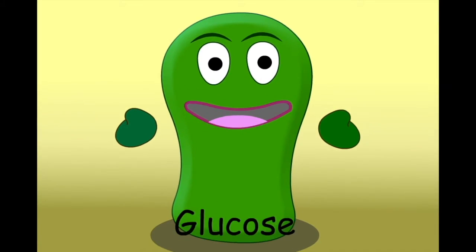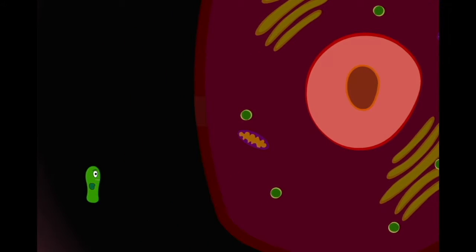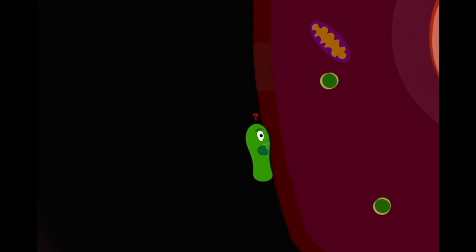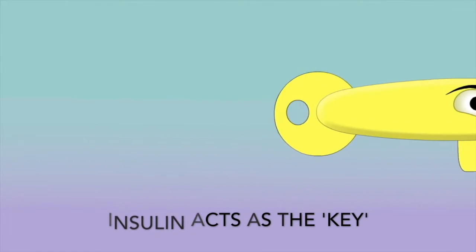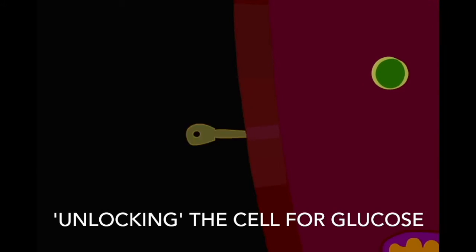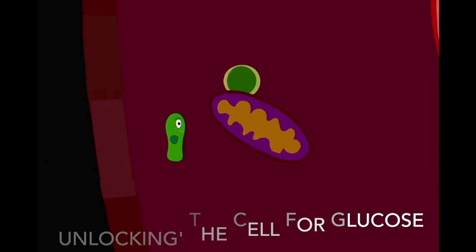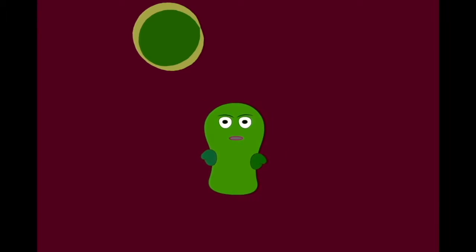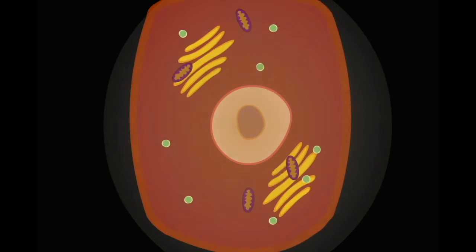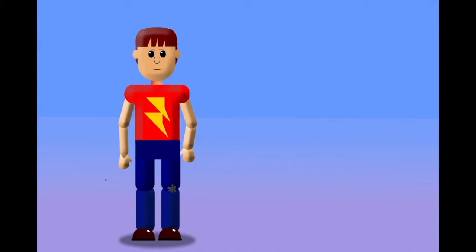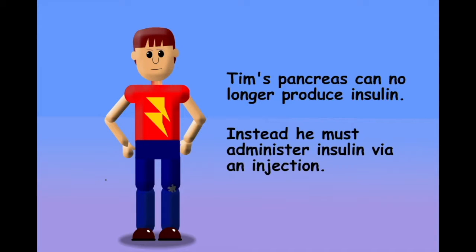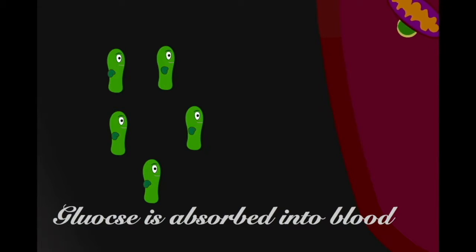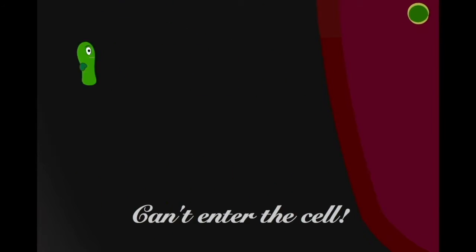The glucose we absorb into our blood from our diets is an important source of energy for our cells, but glucose can't pass into a cell without help. We need insulin to interact with the cell membrane first, making it permeable to the glucose which can then be broken down for energy. As a sufferer of type 1 diabetes, Tim's pancreas can no longer produce insulin. As he forgot to take his insulin this morning, the glucose that he absorbed into his body at breakfast can't be used by his cells.